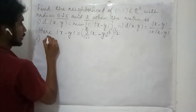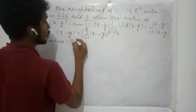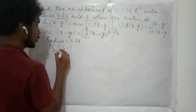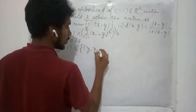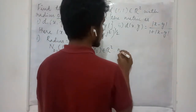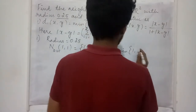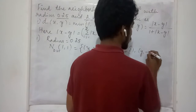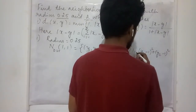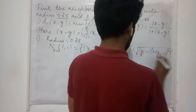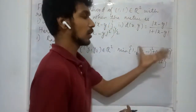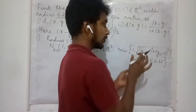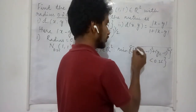Let us get into this case. When the radius is 0.25, the neighborhood of (1,1) is going to collect the ordered pairs in R² such that the minimum of 1 and √((y₁−1)² + (y₂−1)²) is less than 0.25. Here x₁ is 1, so we write (y₁−1)² + (y₂−1)². This entire quantity has to be less than 0.25. It is the minimum of these two quantities that must be less than 0.25, and since 1 is a fixed constant not less than 0.25, the minimum quantity must be the distance term.